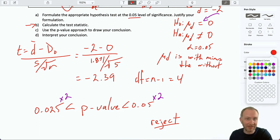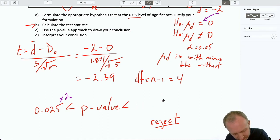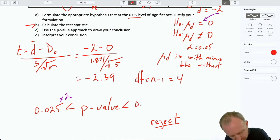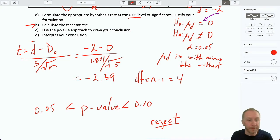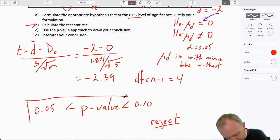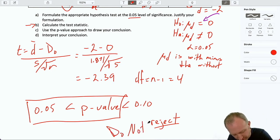So, our p-value is not between 0.05 and 0.025. Our p-value is actually between 0.1 and 0.05. And, again, this is one of those examples where that mistake makes all the difference in the world. Because now, that p-value is greater than my level of significance. Do not reject.